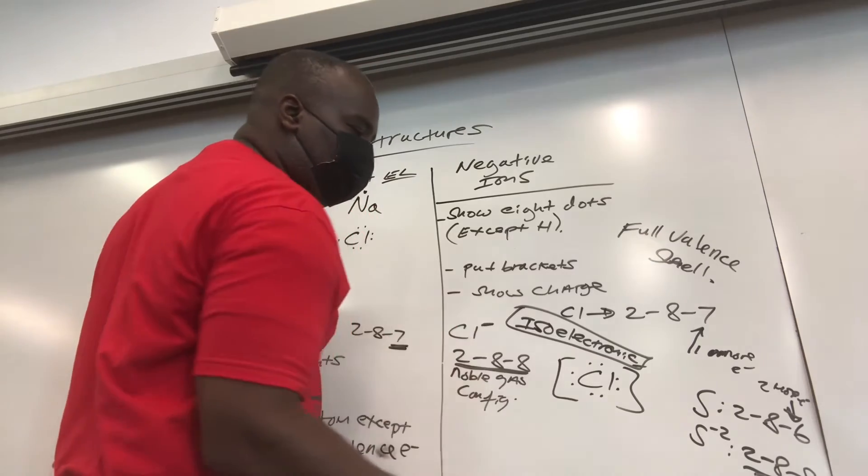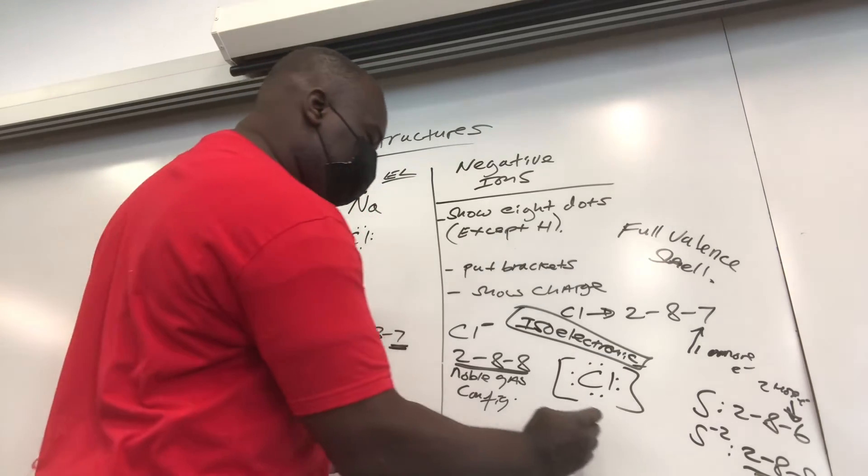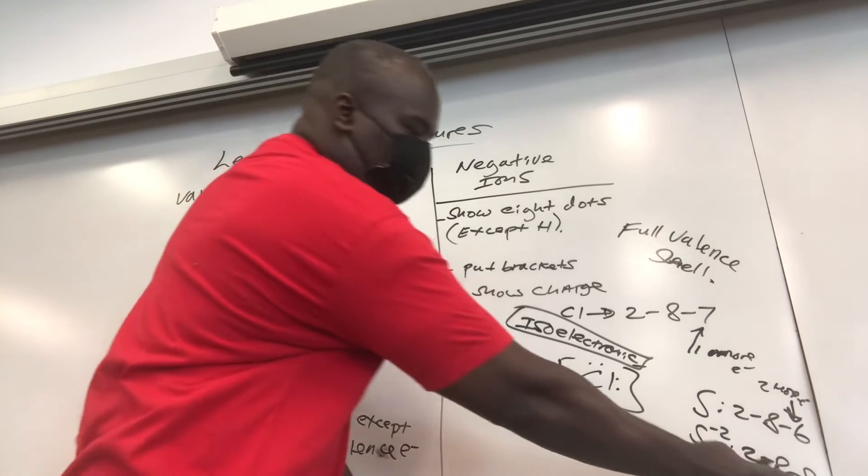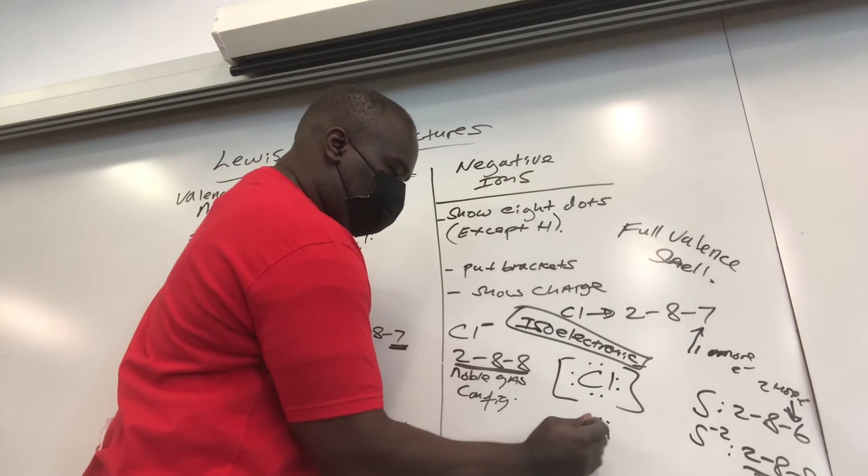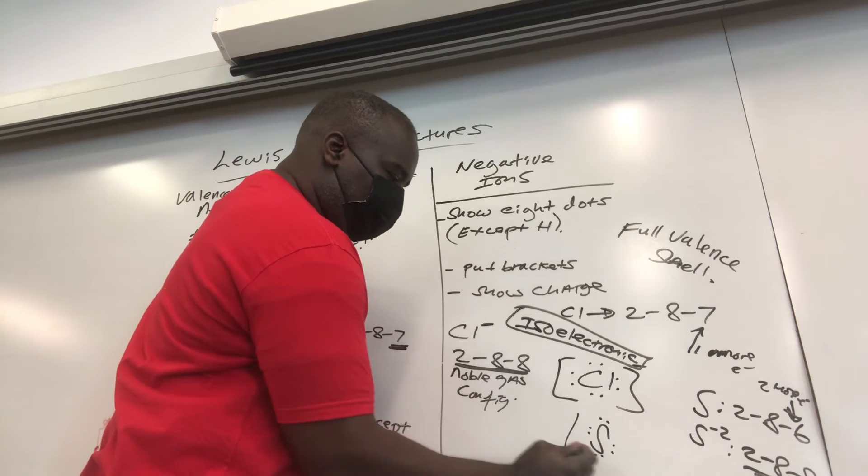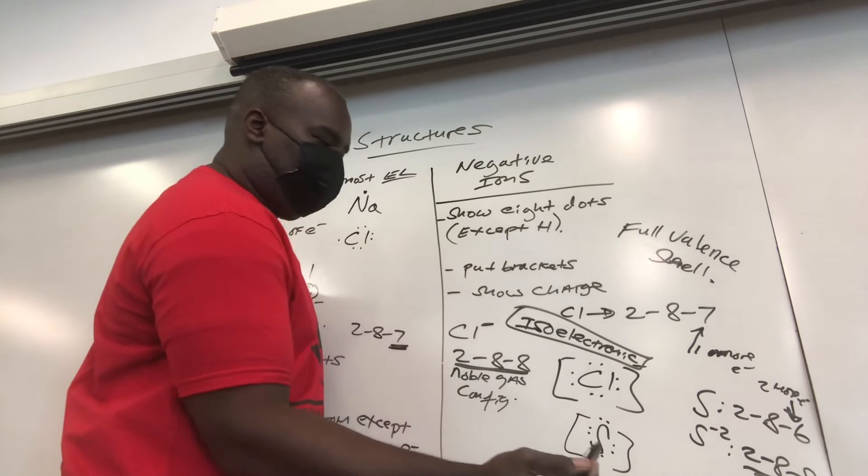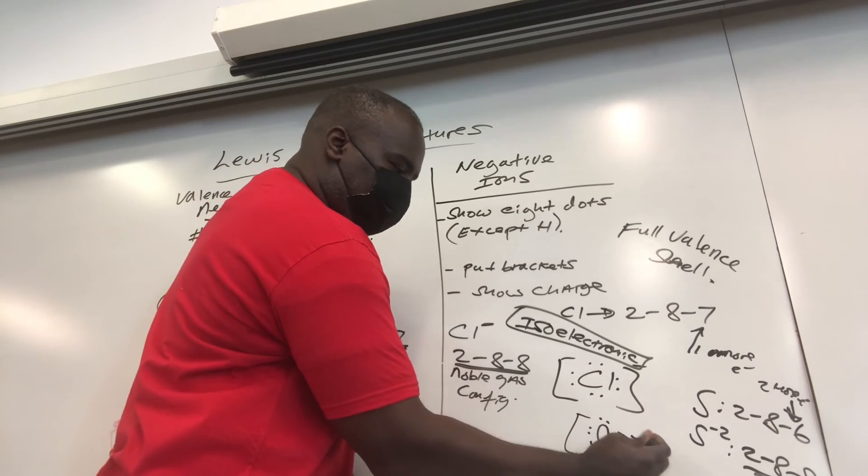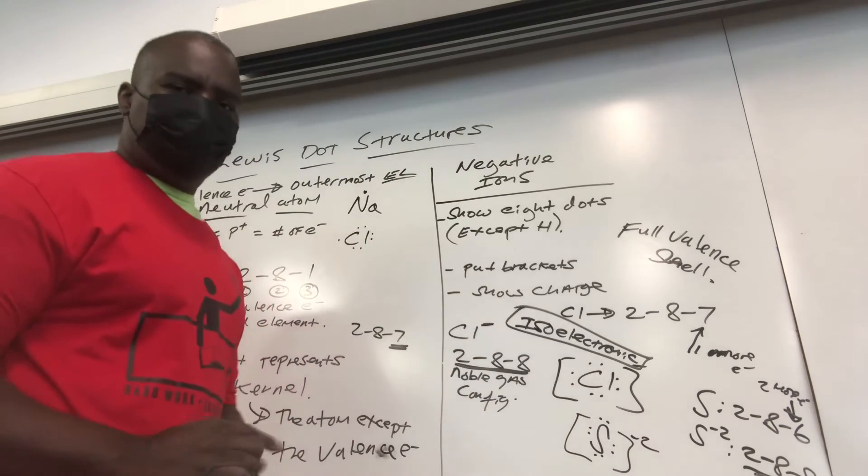So how would you do the dot structure for S minus 2? You would simply put your S down, represents the kernel, and you put your eight dots around it. 1, 2, 3, 4, 5, 6, 7, 8. You put your brackets, and you put your charge. Now be careful, this is minus 2. Minus 2 goes there, and you're done.